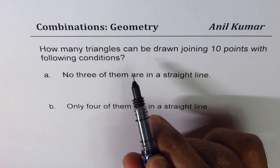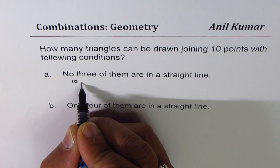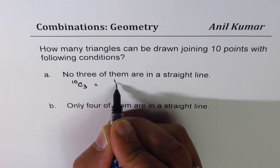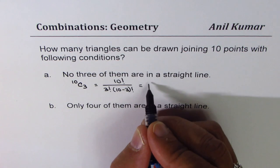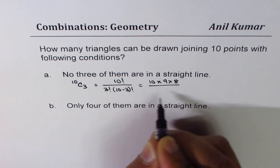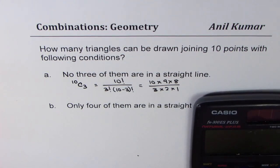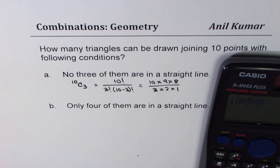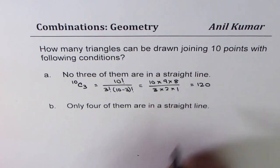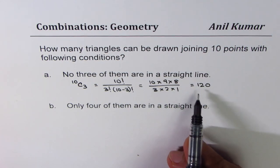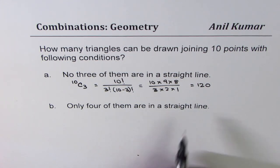To make a triangle we need a combination of three points. Since we have 10 points, the total number of combinations is 10C3, which is 10 factorial divided by 3 factorial times 7 factorial — which can also be written as 10 times 9 times 8 divided by 3 times 2 times 1. That gives us 120. So with 10 points we can form 120 triangles.